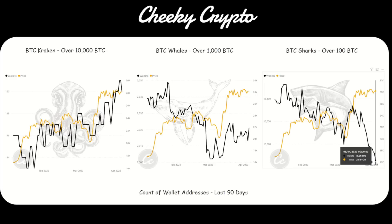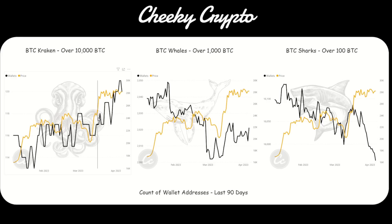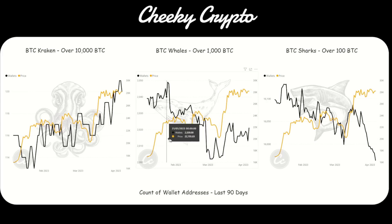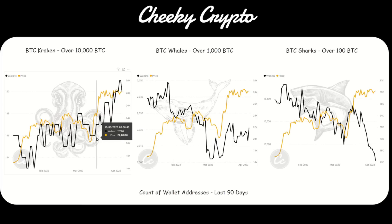When we see retail investors FOMO-ing in and shark players — those with 100 Bitcoin or more — coming out of their positions, it's clearly a transfer of wealth occurring. We can't really be too bullish if these big players are not participating. Now, the Kraken-size wallet players are accumulating, and they're doing amazingly well — but you have to bear in mind that Kraken players are vastly different operators than retail or shark investors. They are more aligned to whale investors, and I think some of these whale wallets are collaborating together.